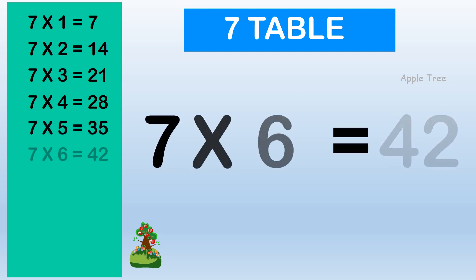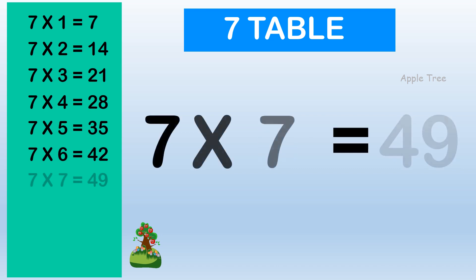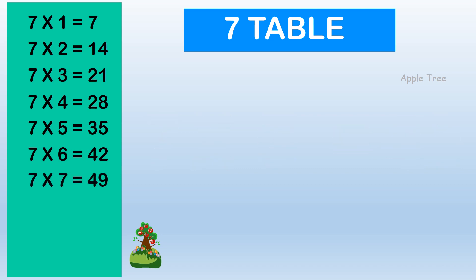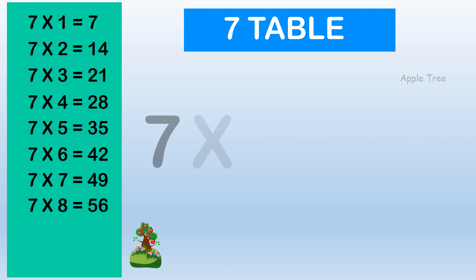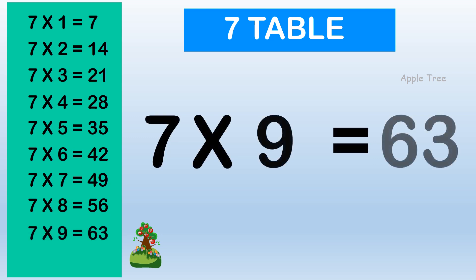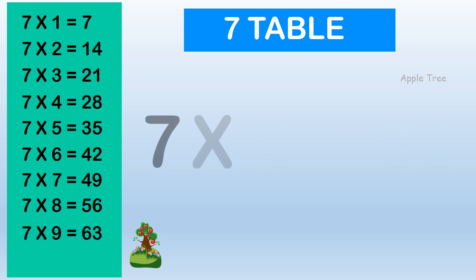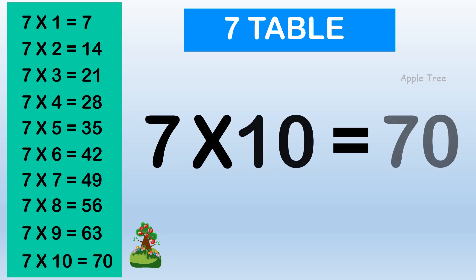7 × 6 = 42, 7 × 7 = 49, 7 × 8 = 56, 7 × 9 = 63, 7 × 10 = 70.